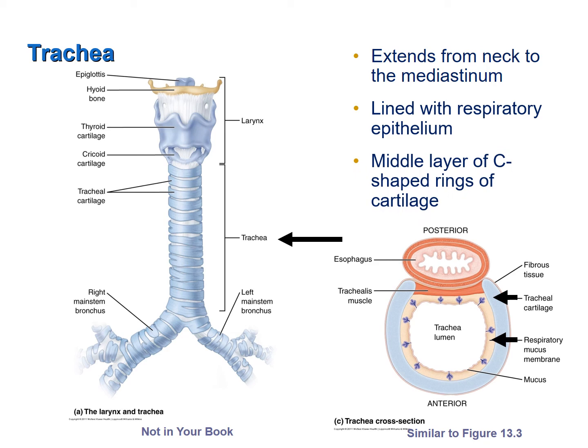The middle layer of the trachea consists of C-shaped rings of cartilage that are somewhat flexible but rigid enough to keep an open airway. The C-shape exists because the esophagus is posterior to the trachea — a trachealis muscle can relax to allow a bolus of swallowed food to pass unobstructed down the esophagus.